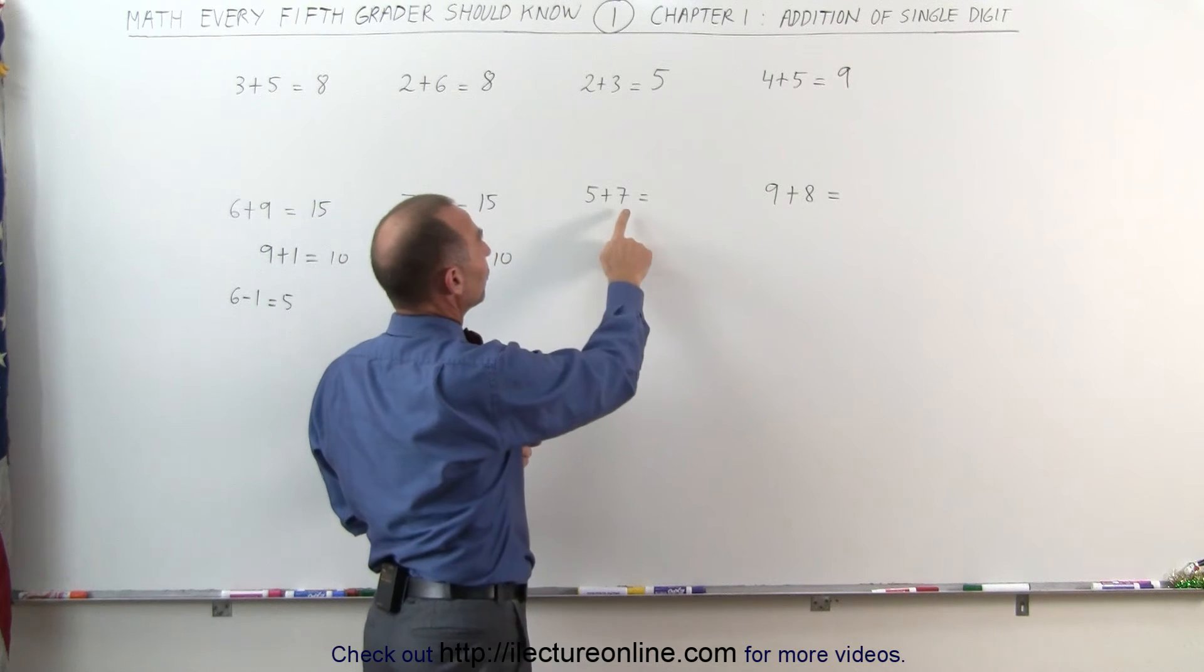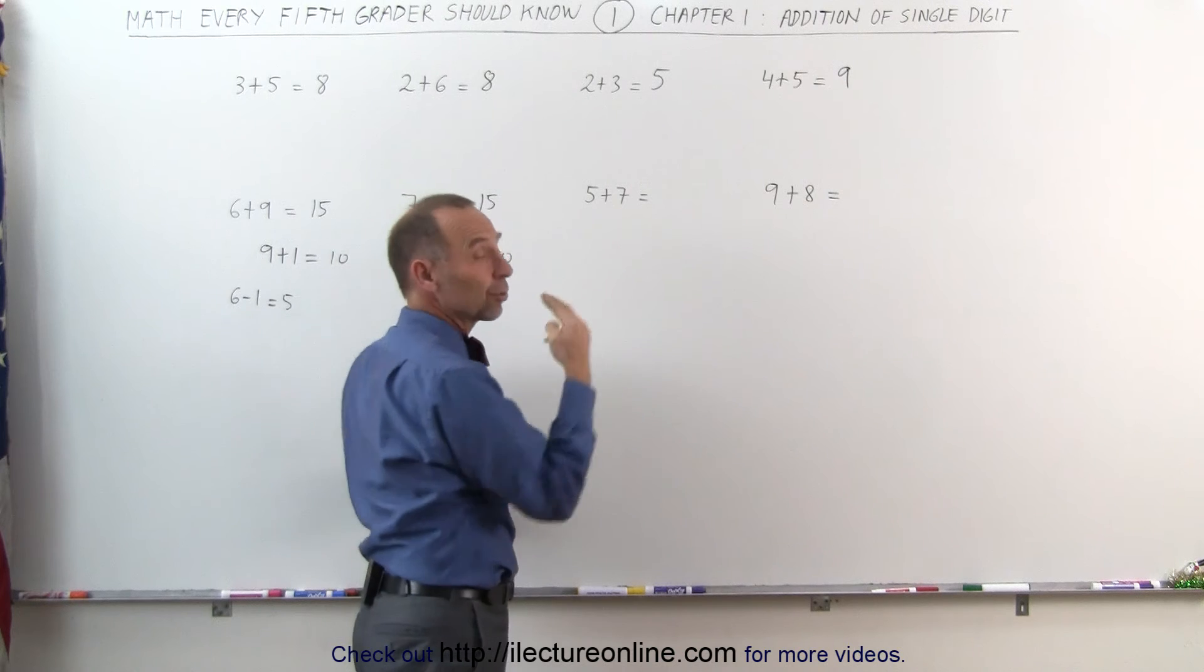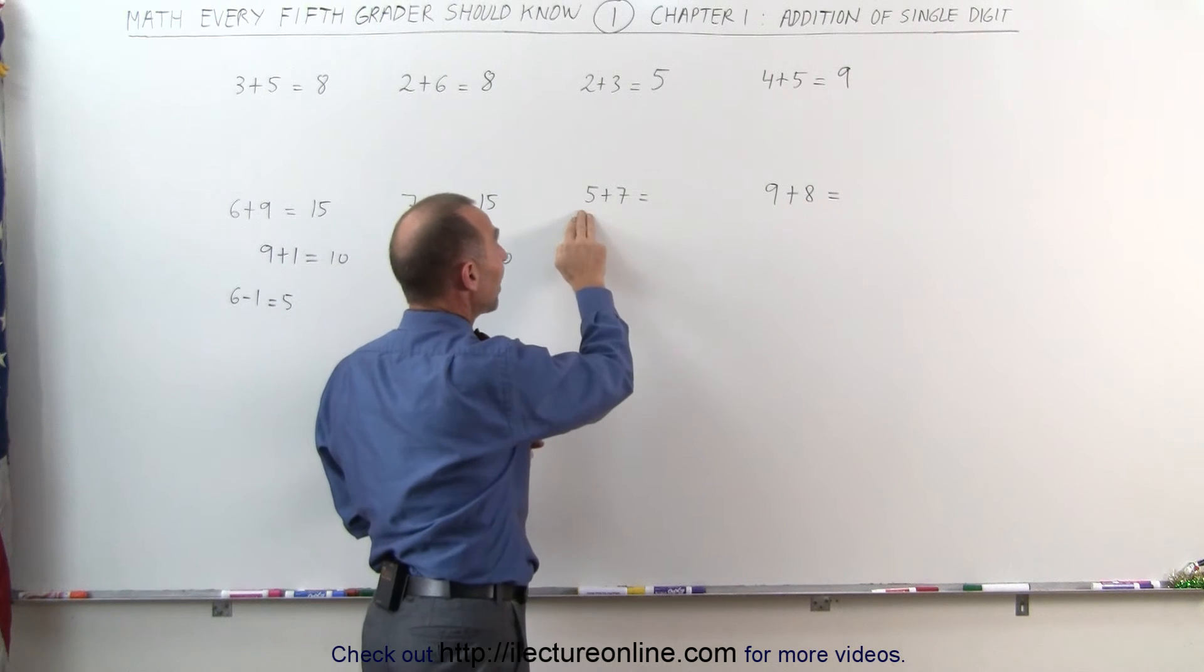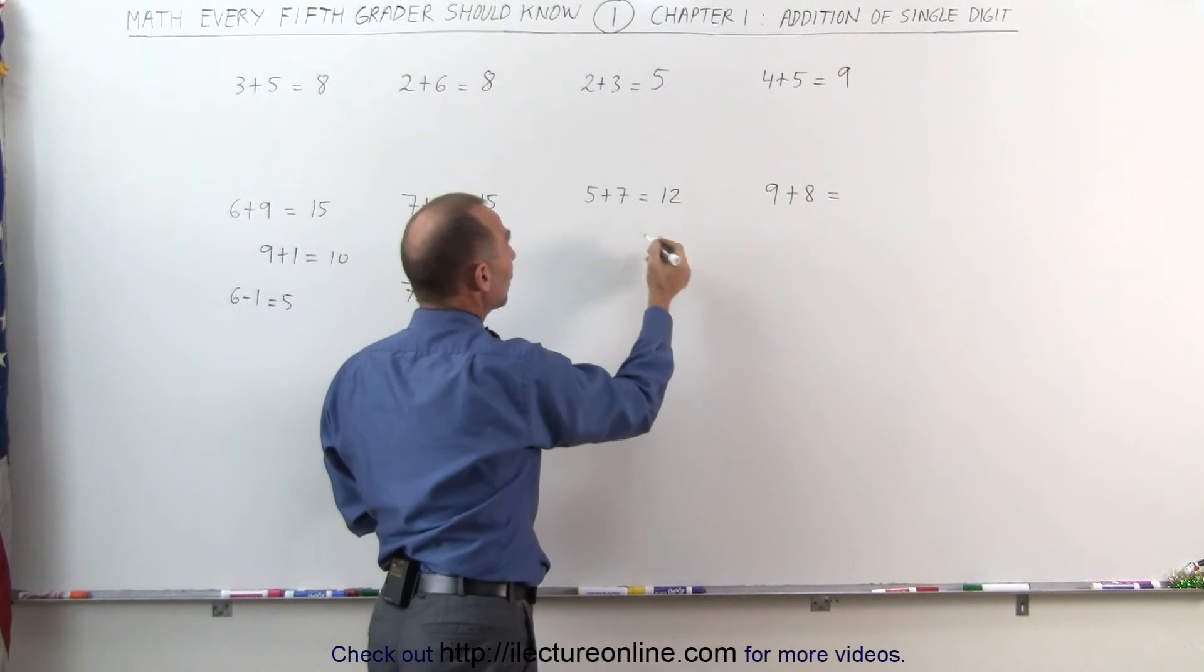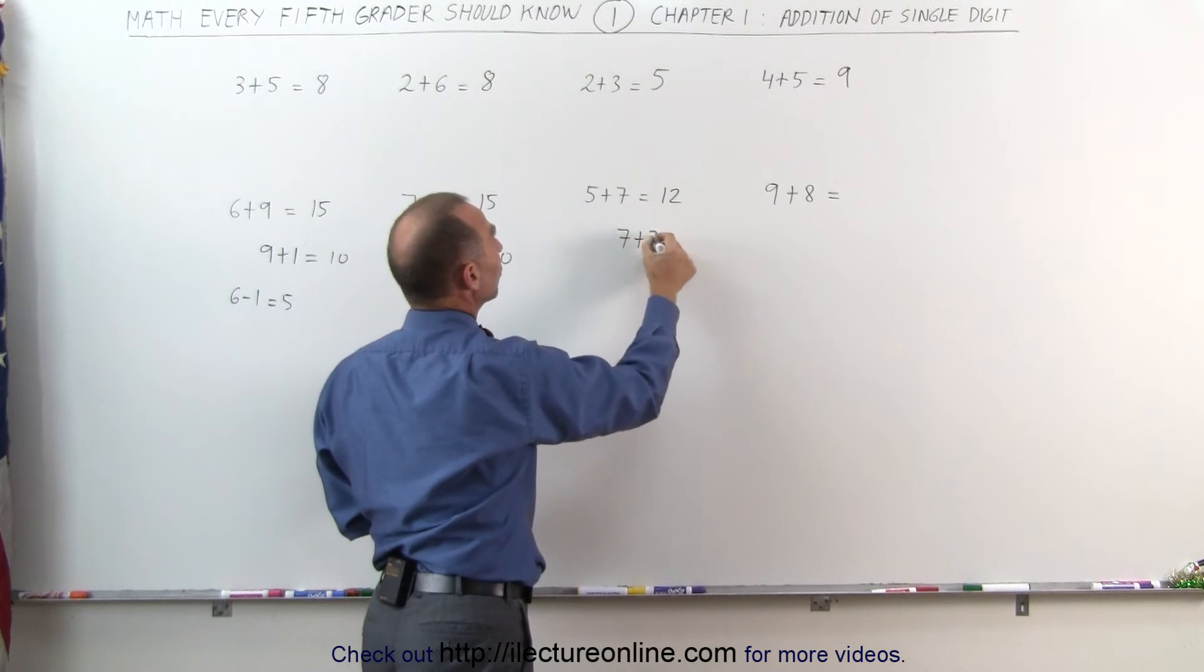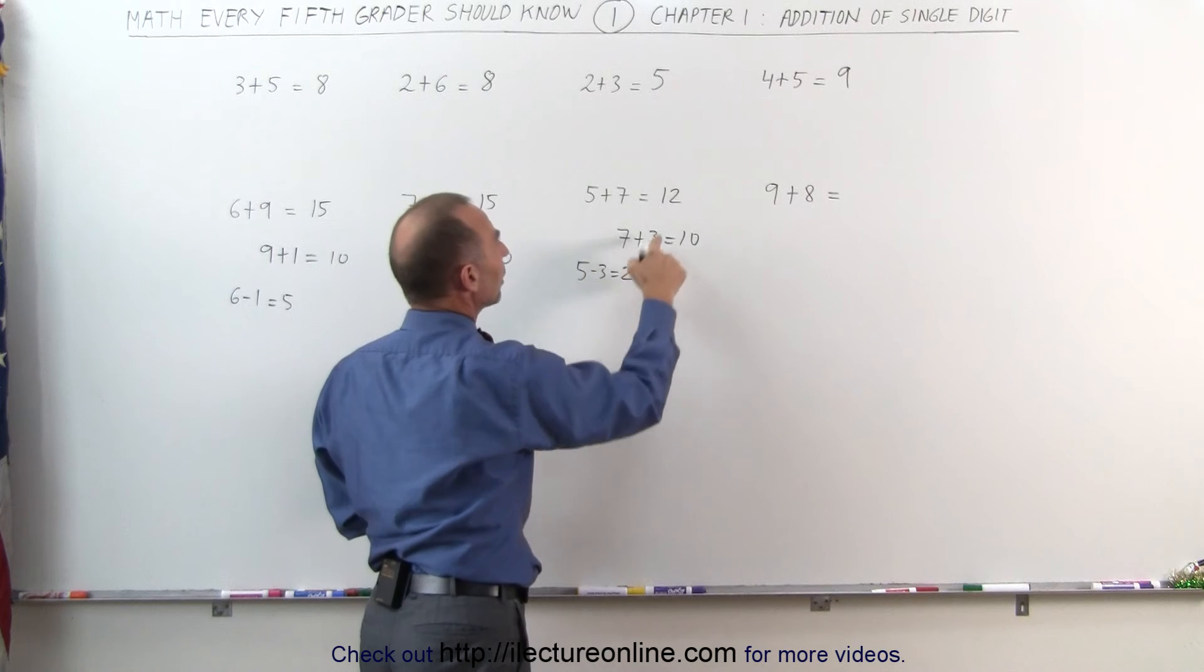Here we do the same thing with 5 plus 7, we take the biggest number, 7, how many more do we need to make it to 10? We need 3 more, we take that away from 5, take away 3 from 5, that gives me 2, 10 plus 2 is 12. Again, what we did was, we had 7, we need 3 more to make it to 10, we subtract the 3 from 5, that gives us 2, 10 plus 2 gives us 12.